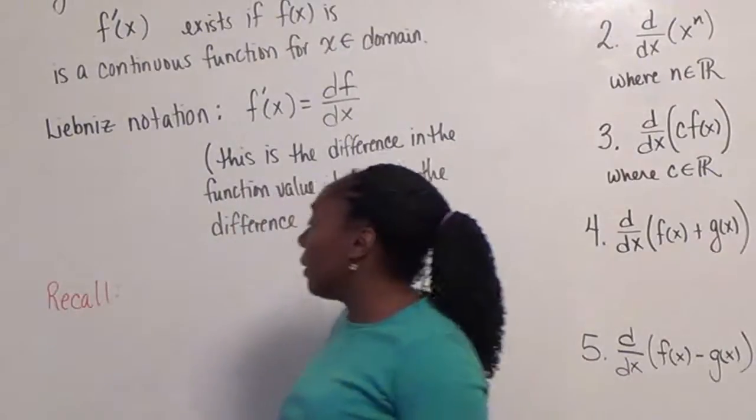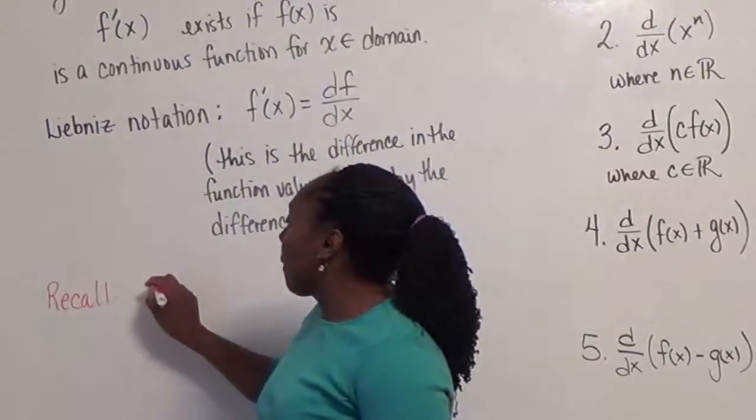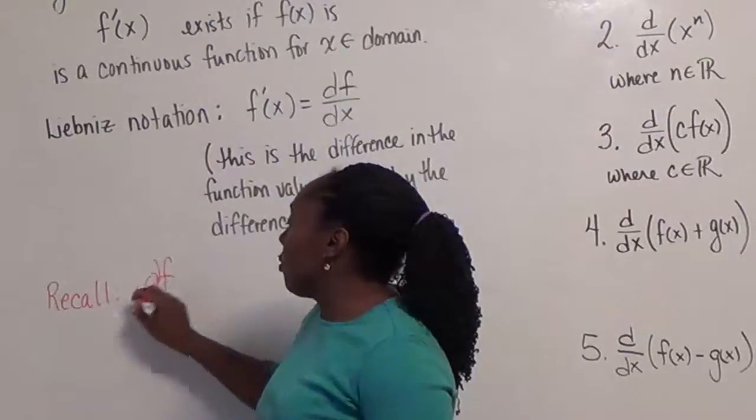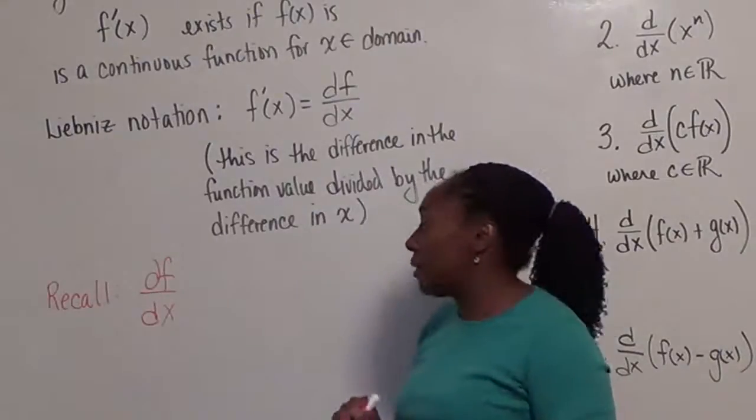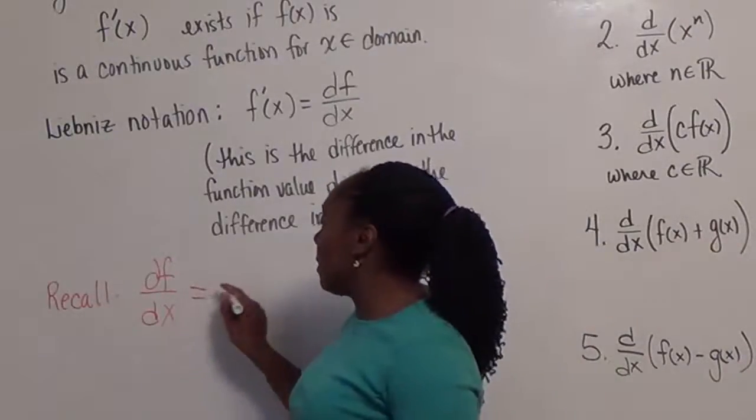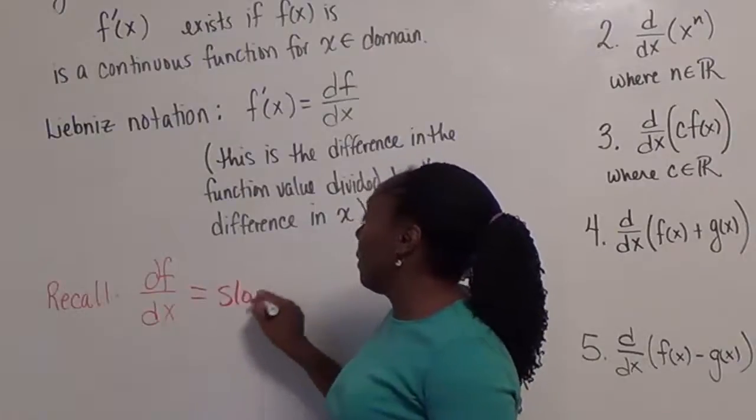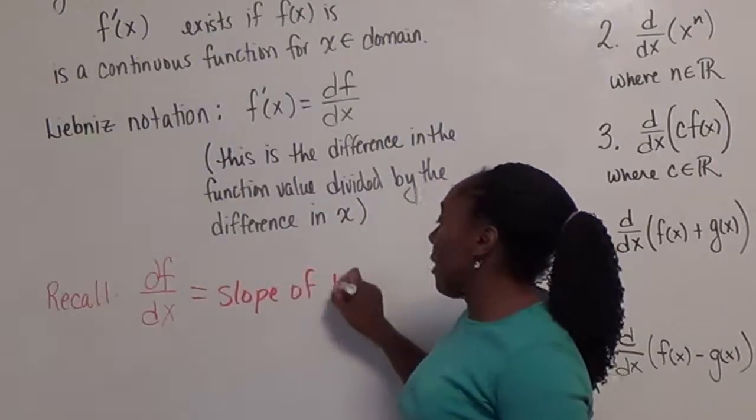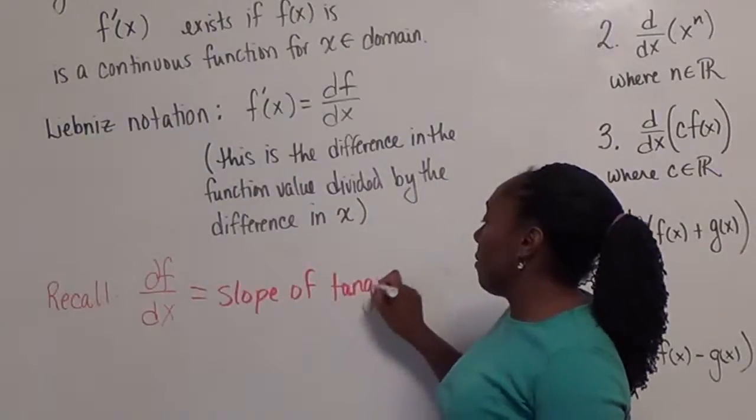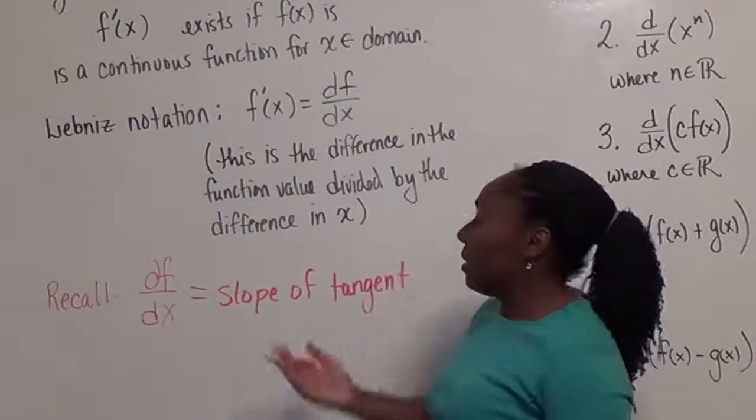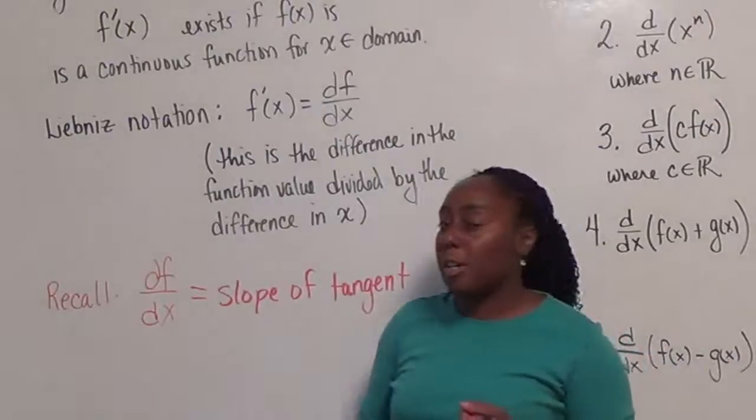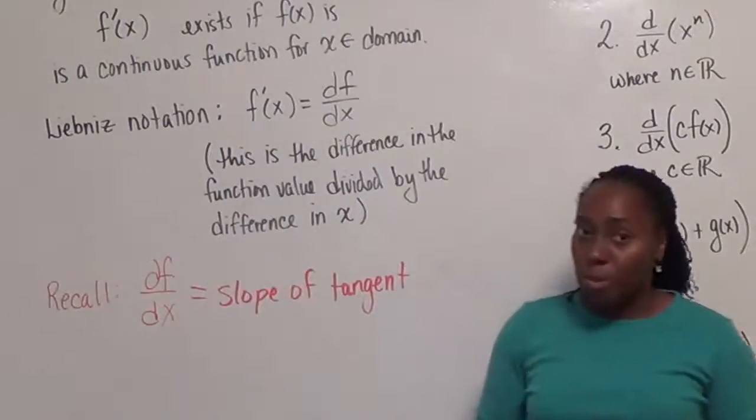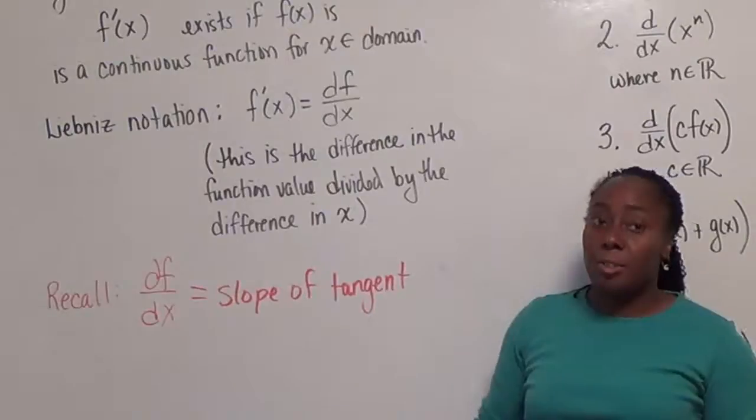One thing to note here: this change in y over the change in x, or difference in the function value over the difference in x - this is our slope of our tangent line. So as I said, it's the same as finding slope, change in y over change in x, but because we're now talking about derivatives, it's the slope of the tangent line, not necessarily the curve.